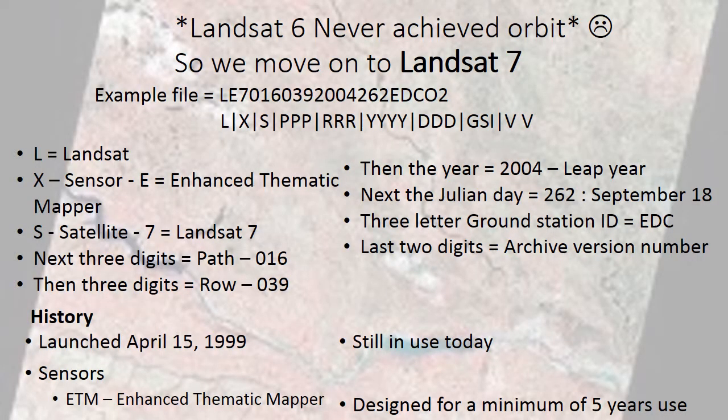Landsat 6 unfortunately never achieved orbit, so we move on to Landsat 7. You'll notice it has an enhanced thematic mapper, and the 7 indicates it is Landsat 7, still in use today. It is about eight hours ahead of Landsat 8 as it passes through the sky above us, so we can look at the differences between the two. It was designed for a minimum of five years and we're well over that number.